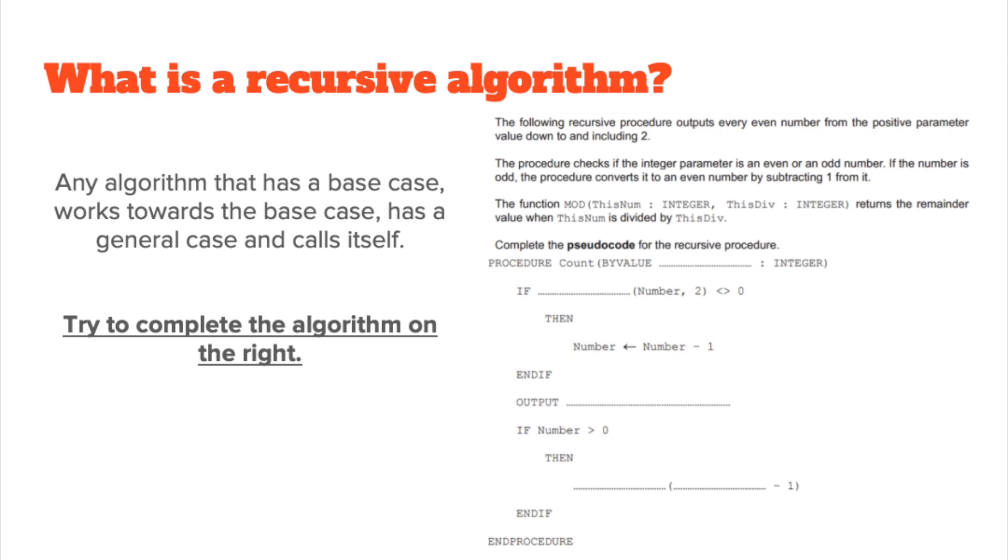Now try to complete the algorithm on the right, pause the video and see if you can attempt this exam question. This normally comes up in paper 3 in pseudocode form and then we'll look at coding it.